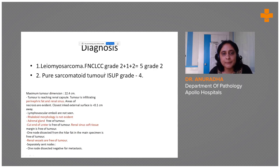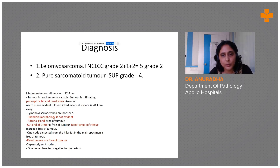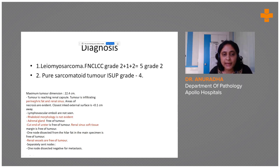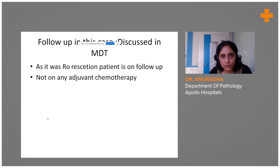Thus we gave two possibilities: one was leiomyosarcoma involving the kidney, and the second was a pure sarcomatoid tumor. We made a thorough search for a carcinomatous component but found none. The perinephric fat and renal sinus were involved by tumor; lipid morphology was not evident; the adrenal was free; and all cut margins were also free.